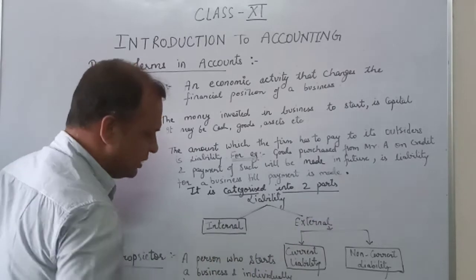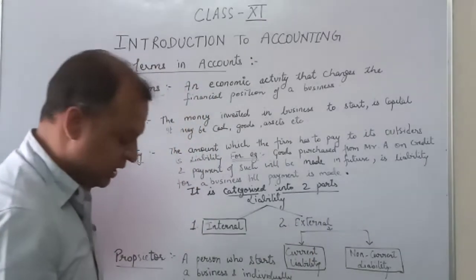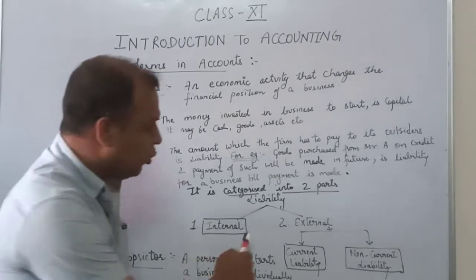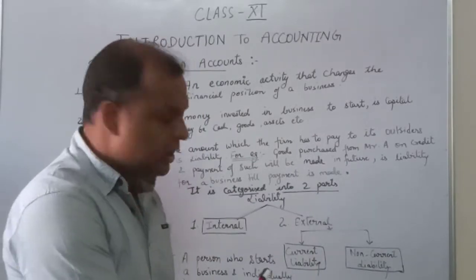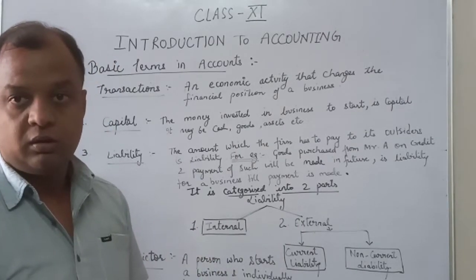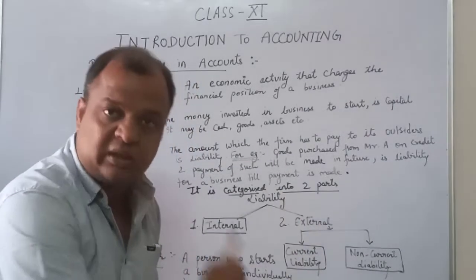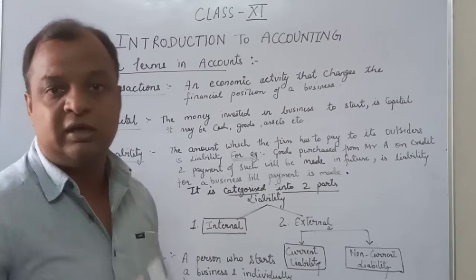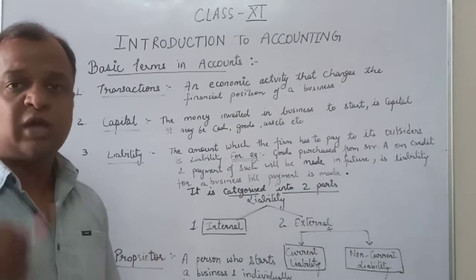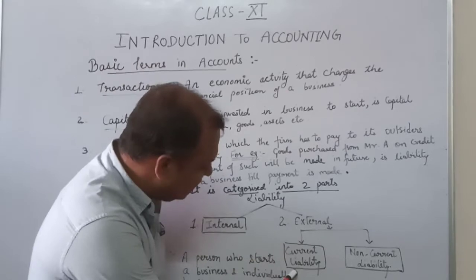Liabilities are categorized into two basic parts: the first one is internal liability and the second one is external liability. Internal liability is the liability which the business has to pay to its owner, whereas external liabilities are the liabilities which the business has to pay to others — outsiders who are not part of the business.